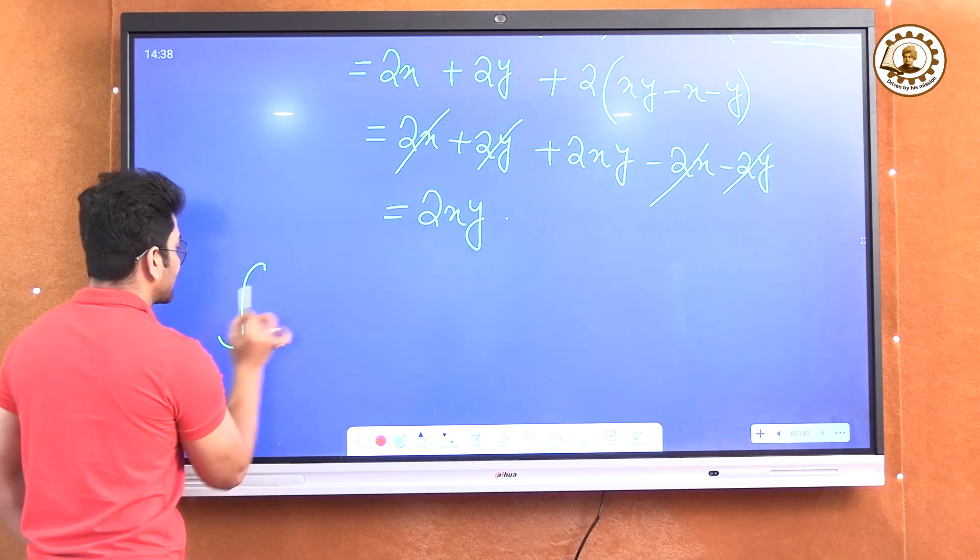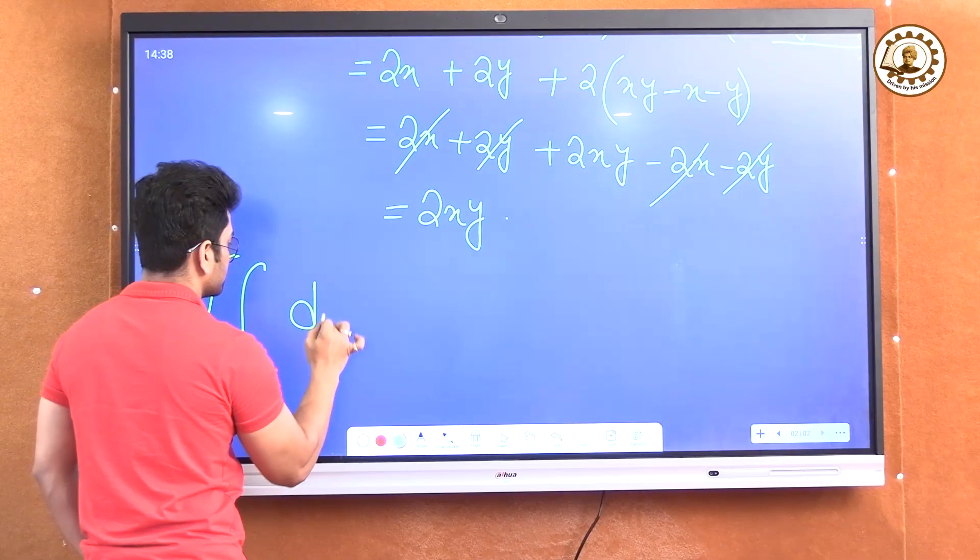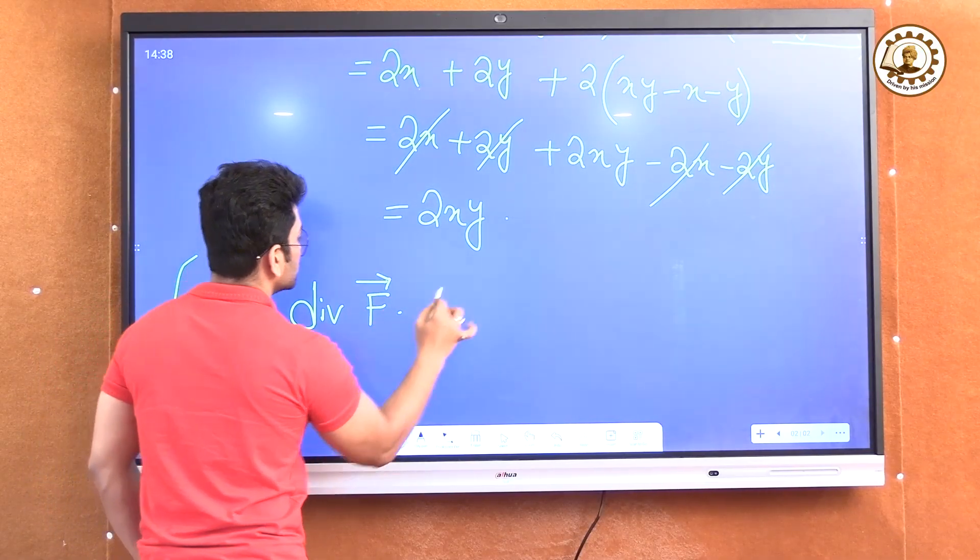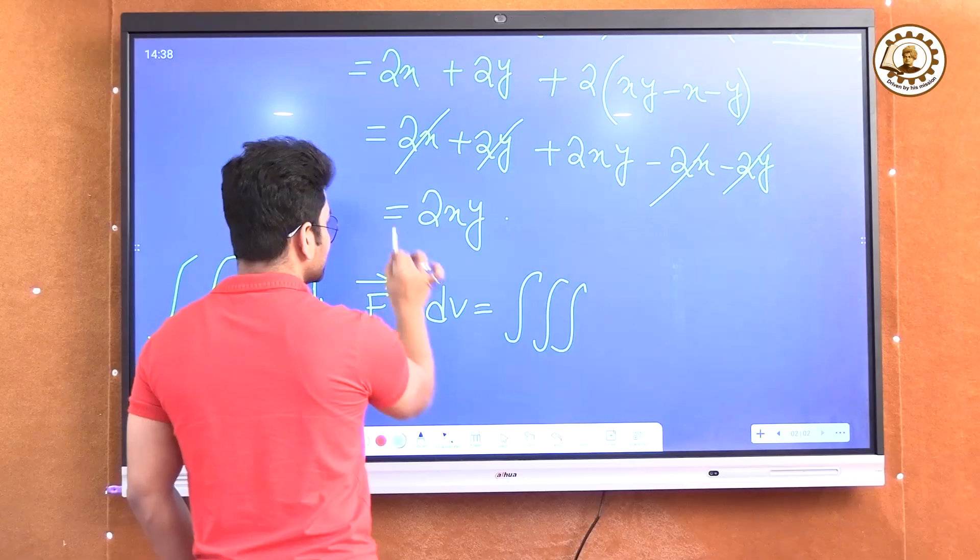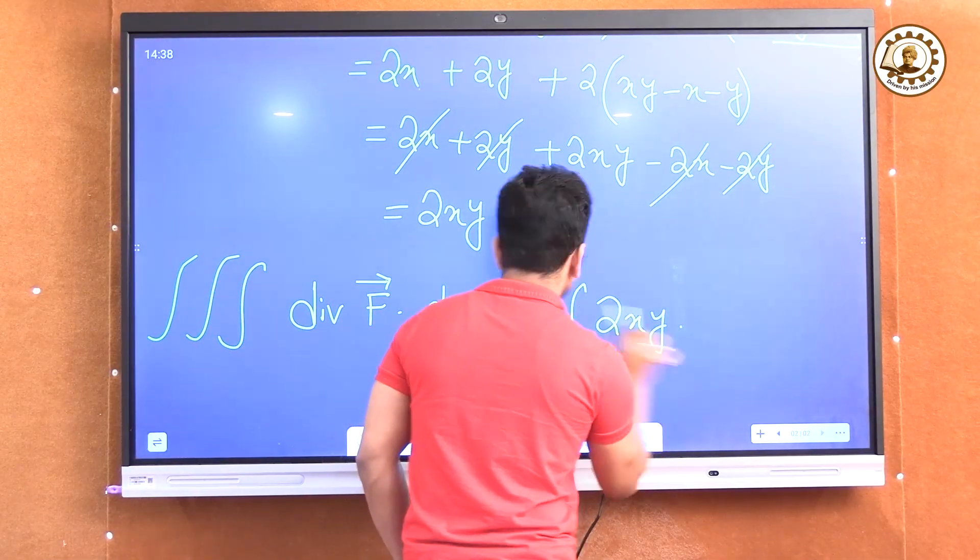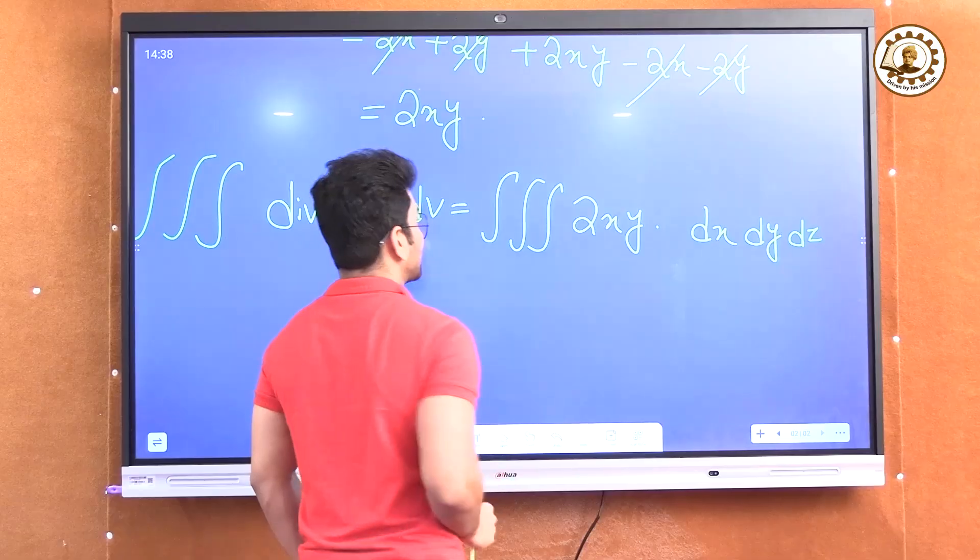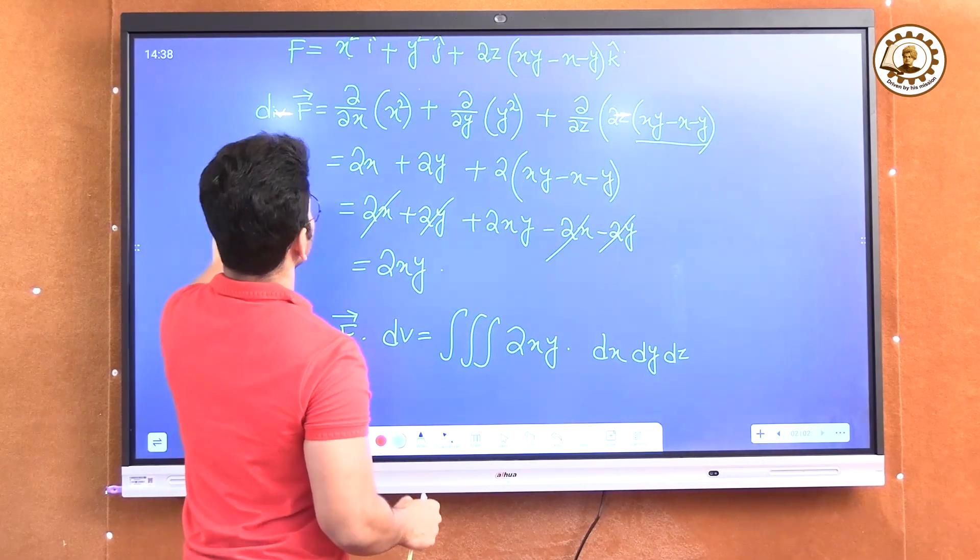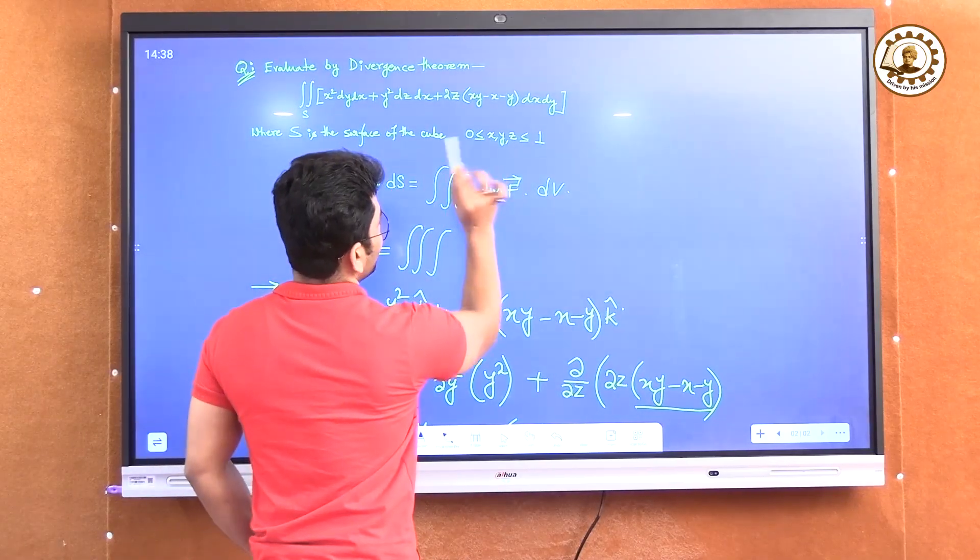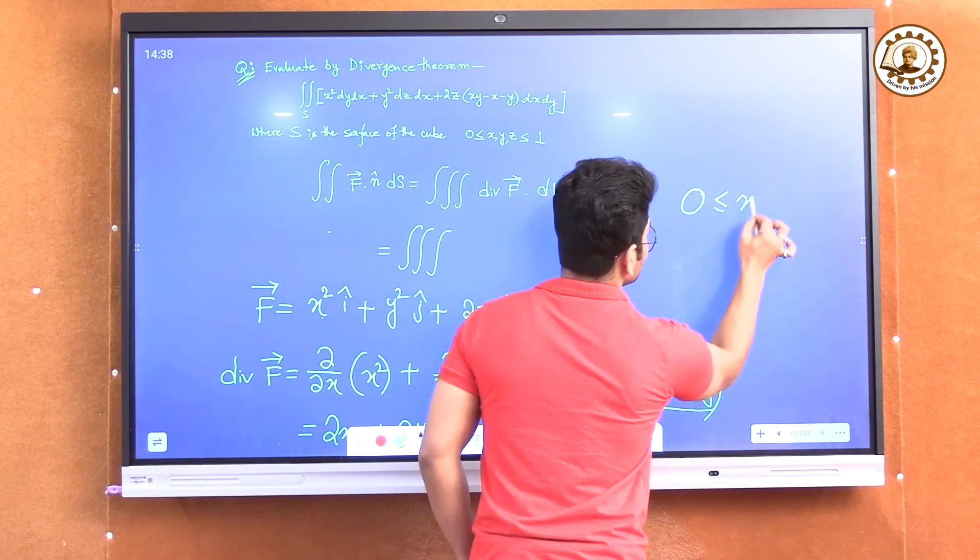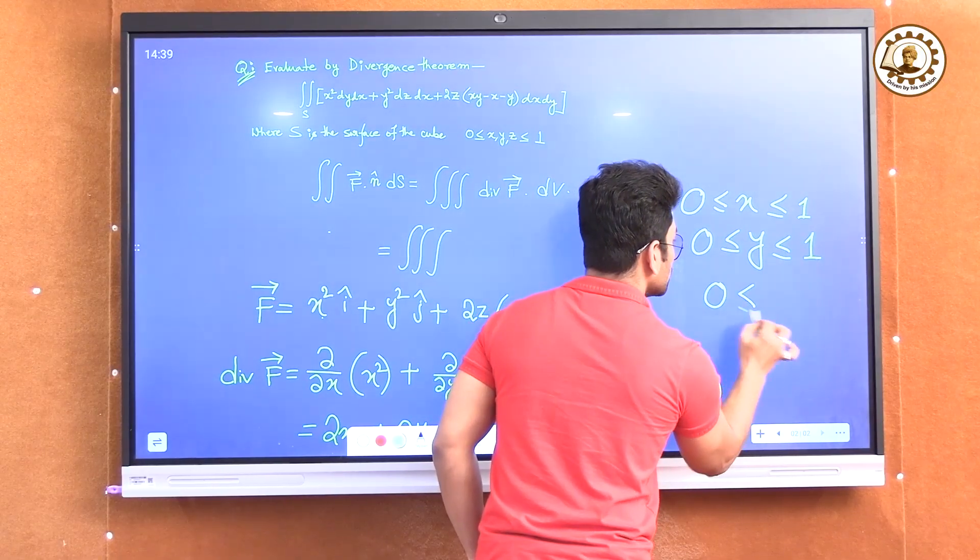As divergence of f equal to 2xy, I can write triple integration divergence of f into dv is equal to triple integral 2xy dv. dv means dx, dy, dz. Now I have to find the limits. The limits are very easy because here the limit is the surface of the cube. x is running from 0 to 1, y is running from 0 to 1 and z is also running from 0 to 1.